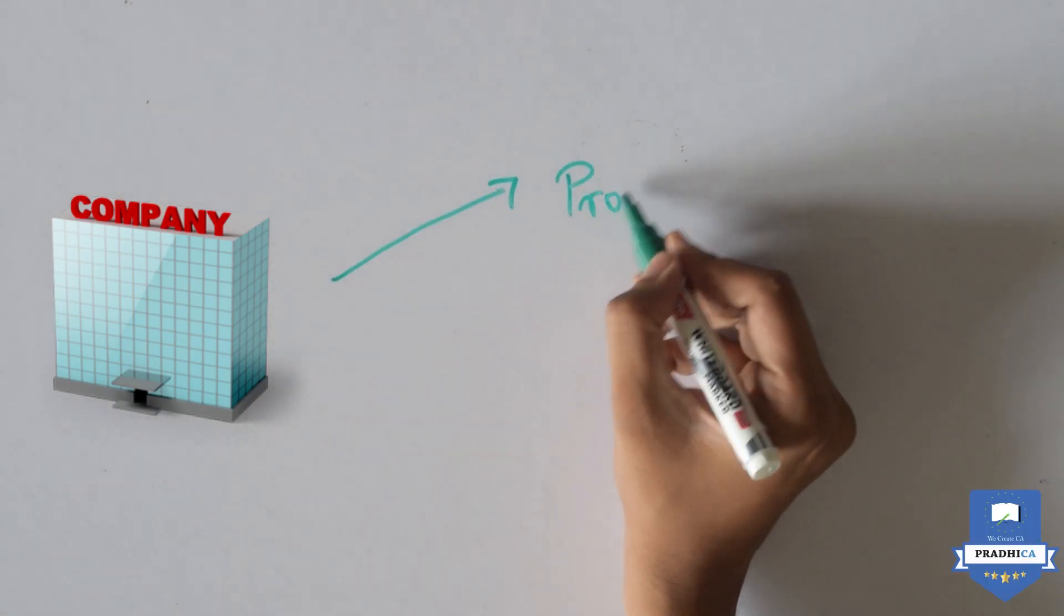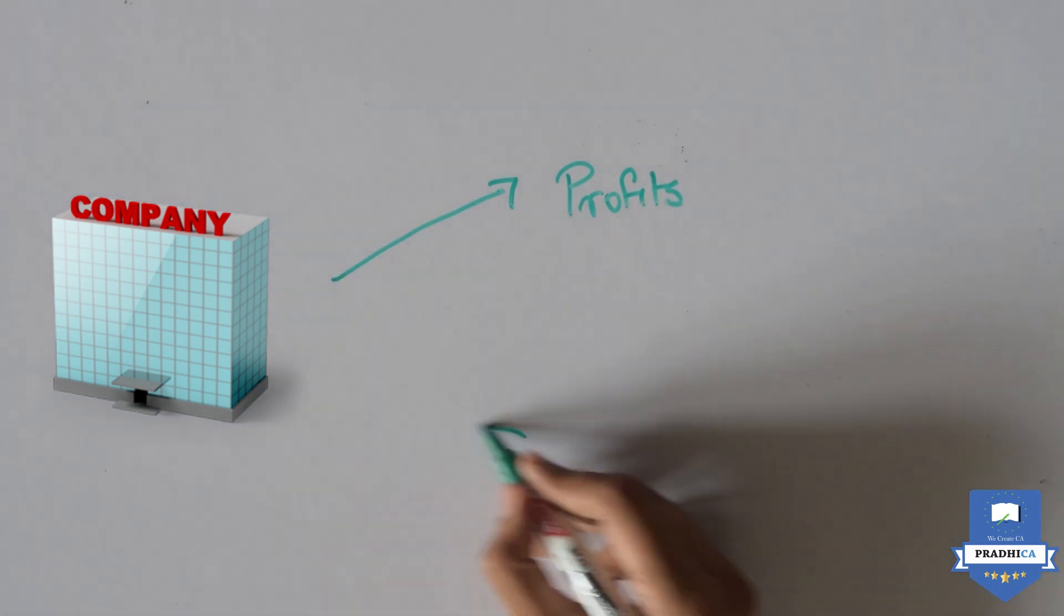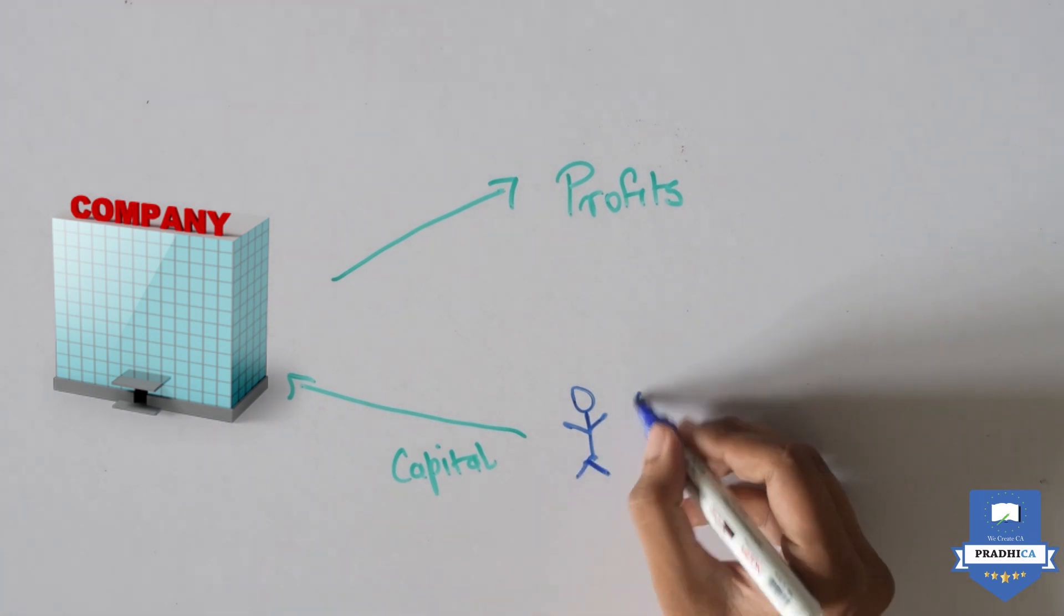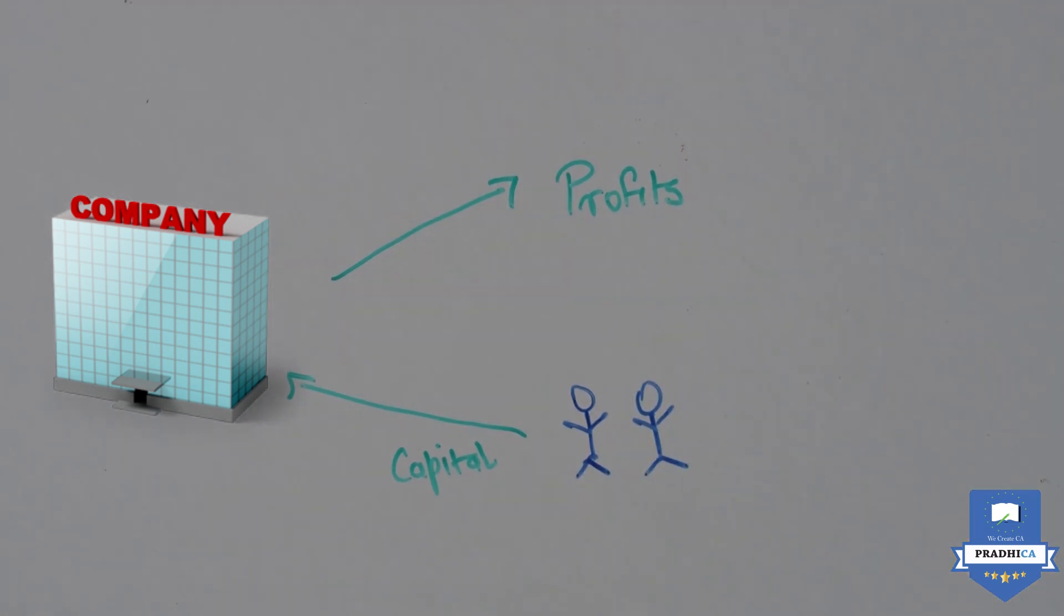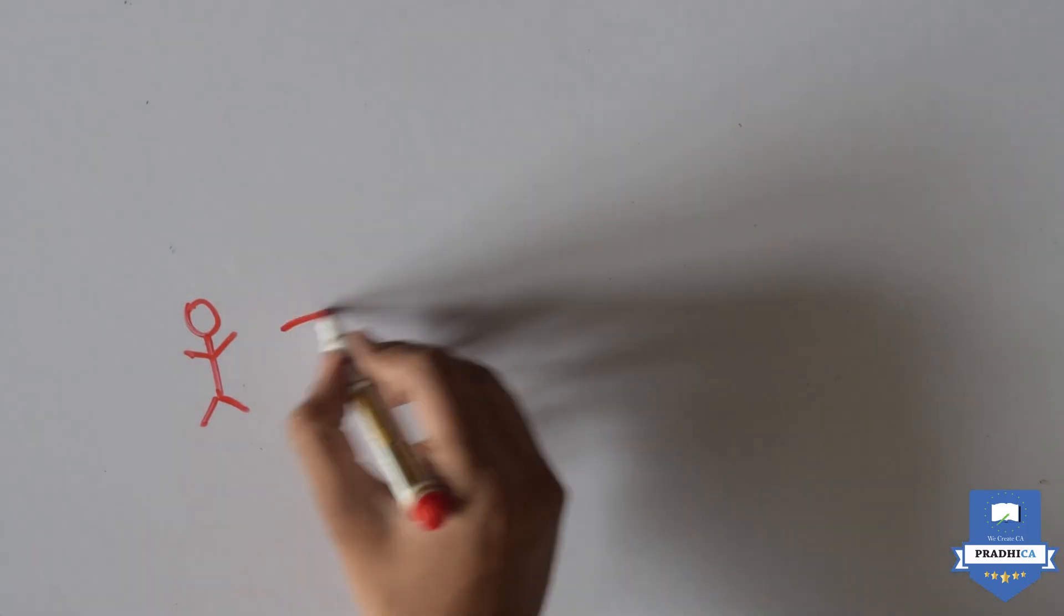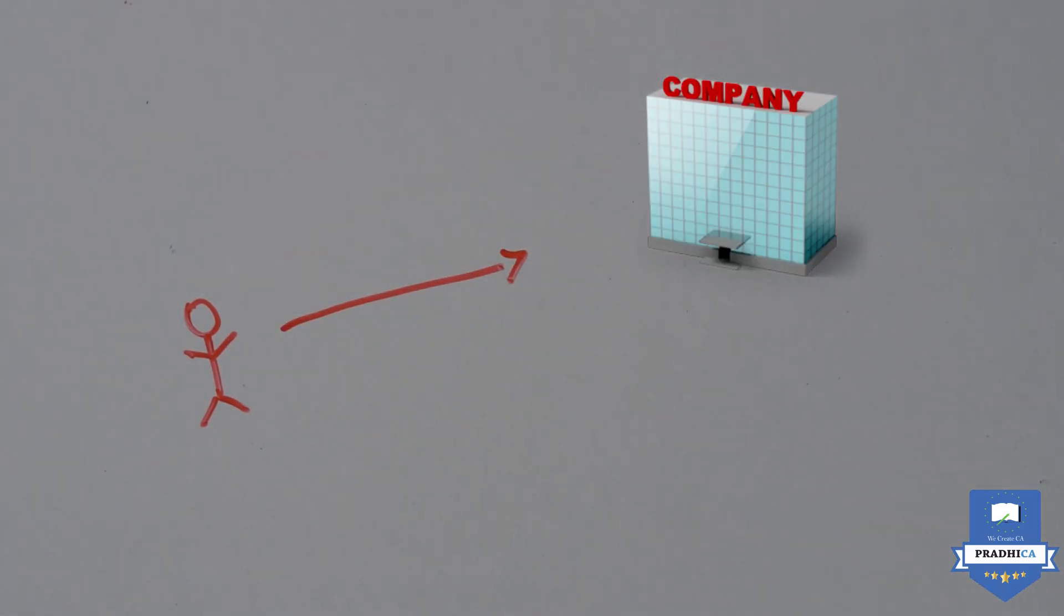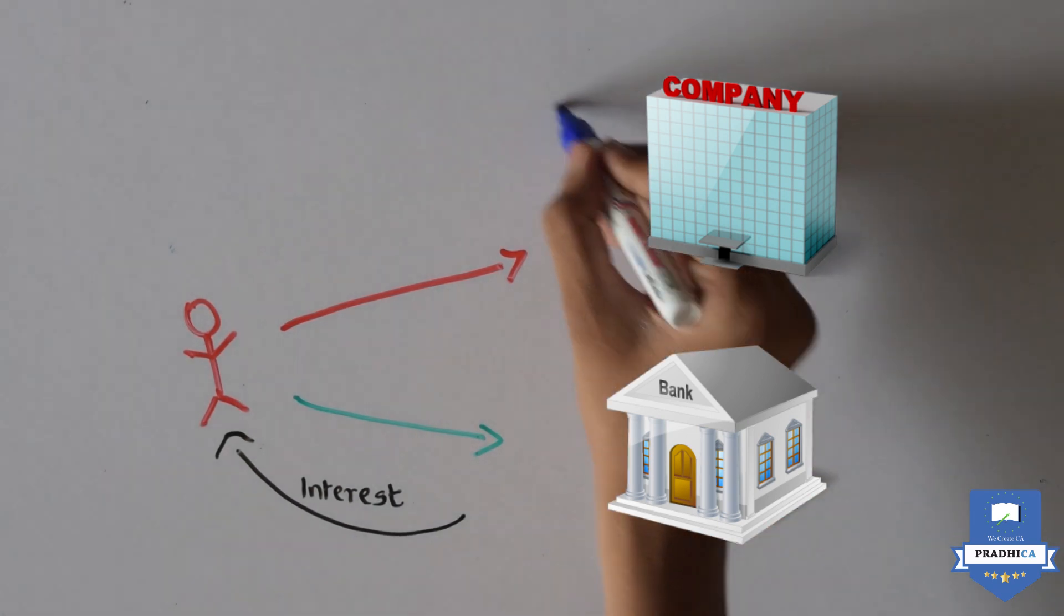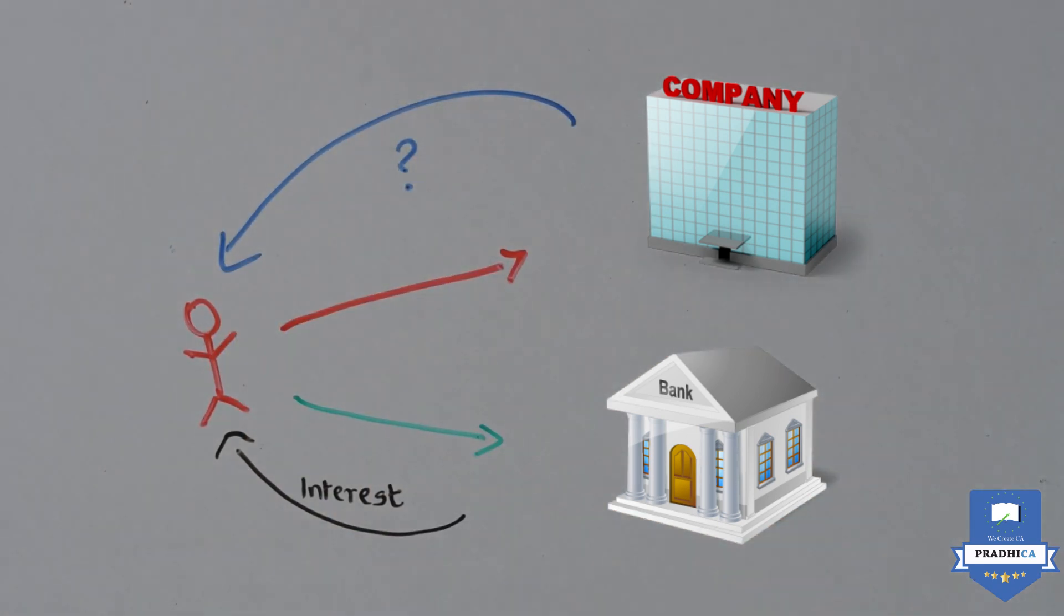Companies make profits out of capital introduced by the shareholders. The shareholder sees the investment in the company as an investment he makes in the bank. Just like the bank pays him an interest for the investment he makes, he expects the company to make some form of return.